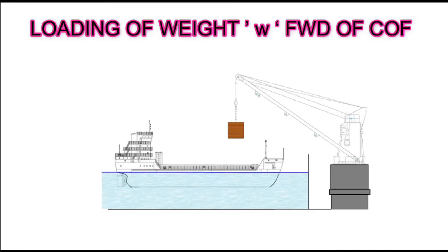In this case, we have an initially even keel ship and we are loading a weight forward of COF. When the weight is loaded, the ship starts to dip forward — forward draft increases and aft draft is reduced.